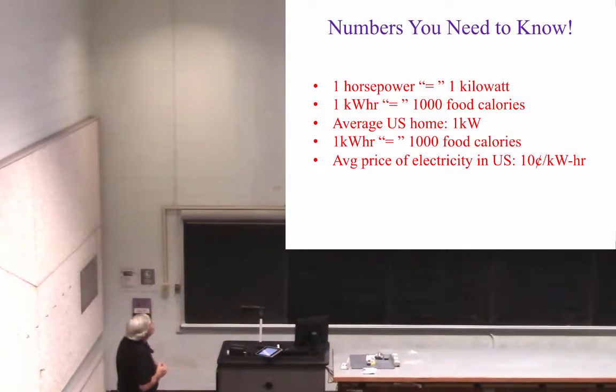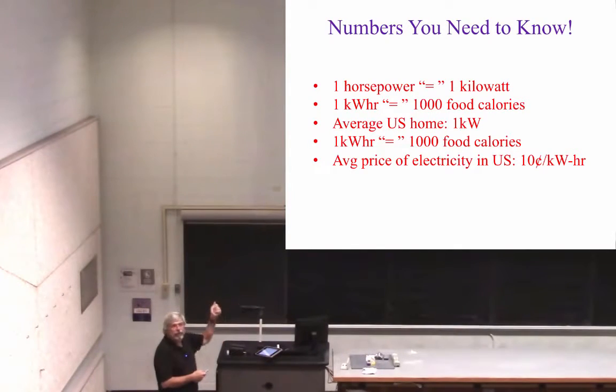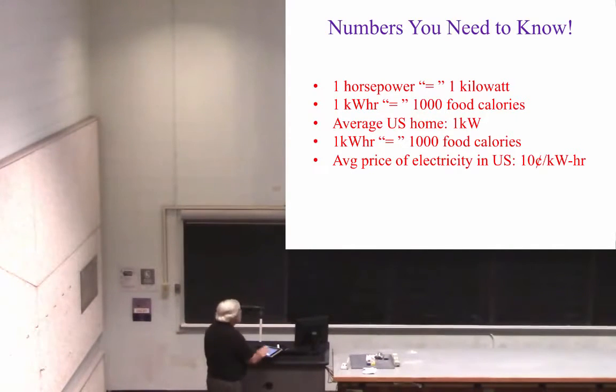These are numbers you really need to know. A horsepower is essentially a kilowatt. For the purposes of this class, a horsepower is a kilowatt. Kilowatt hour is 1,000 food calories, for the purposes of this class. Average home uses one kilowatt. This is really important because we can discuss all kinds of things if we have some numbers to work with. Average price of electricity in the U.S., this is also a very useful number to memorize because it helps you make quick calculations, 10 cents per kilowatt hour.